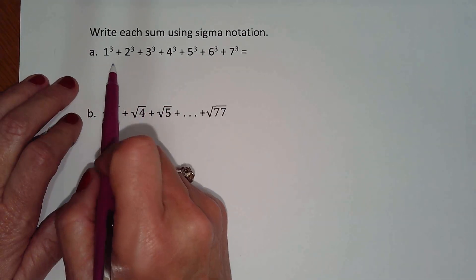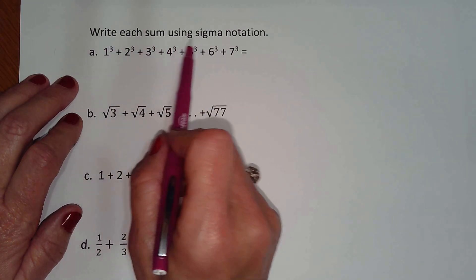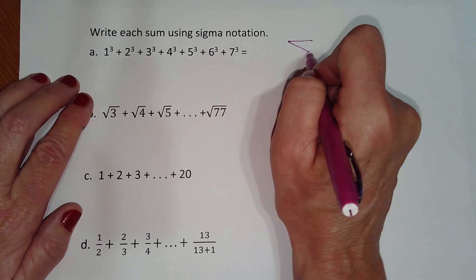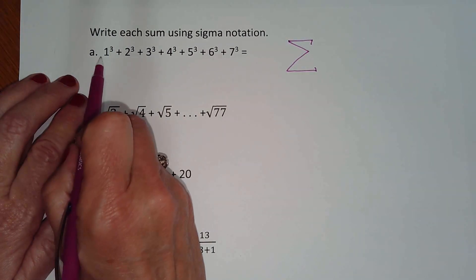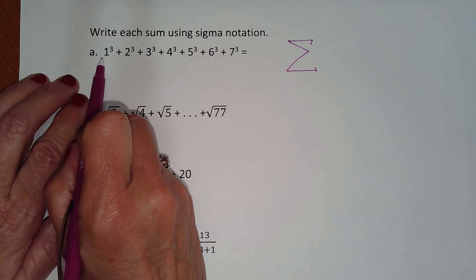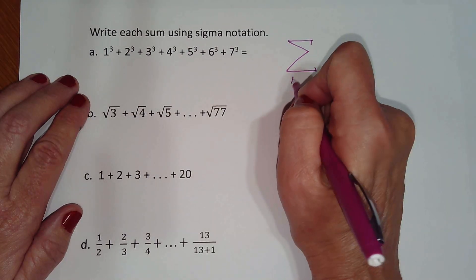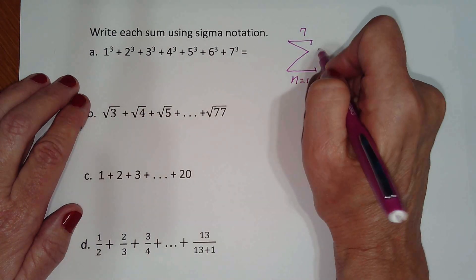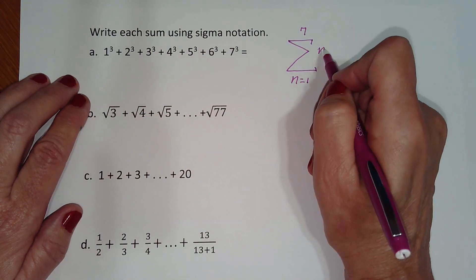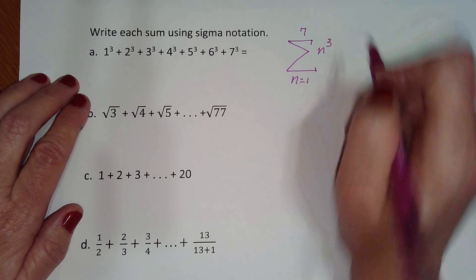In the next set of examples, we're given the series and we're supposed to write each sum using sigma notation. Looking at the series, it looks like the counting numbers raised to the third power: 1, 2, 3, and so on to 7. So we know we're going to start at 1 and end at 7, and the formula is n raised to the third power.